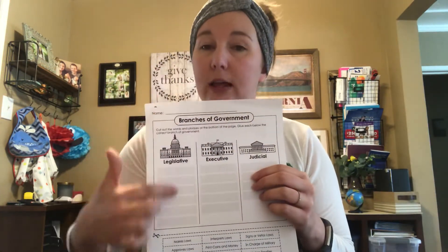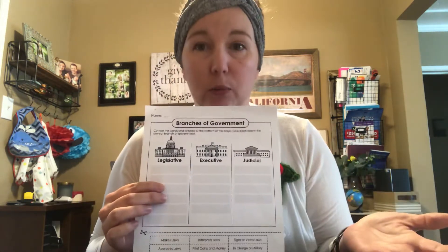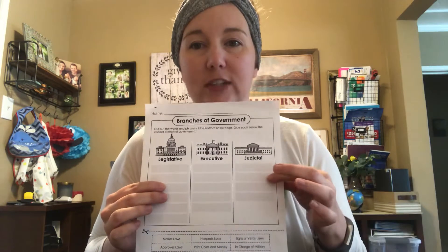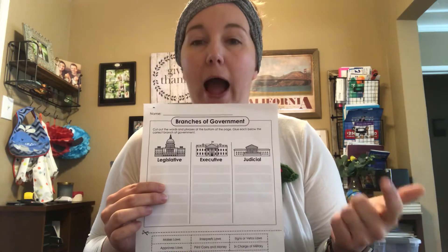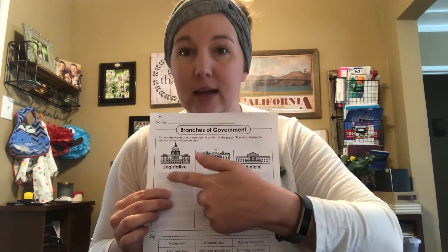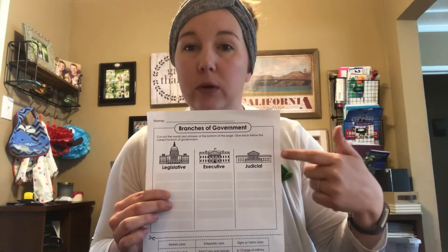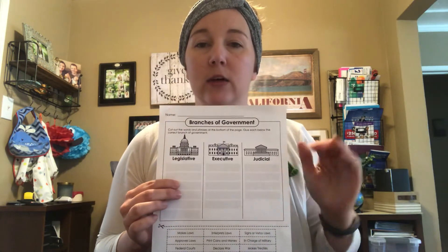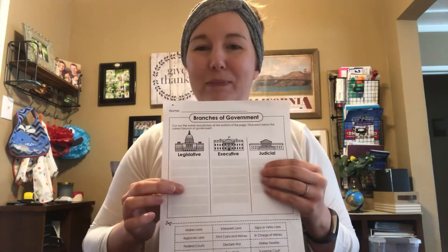Over here we have the judicial branch. What do they do? They judge people — they deal with the laws and figure out how we can best follow the Constitution, which is the law for our entire country. They are the Supreme Court. So people in charge of the executive branch: the president. Legislative: Congress, the Senate, and House of Representatives. And the judicial branch: the judges. There's one chief Supreme Court justice, and then eight other judges — nine judges total.